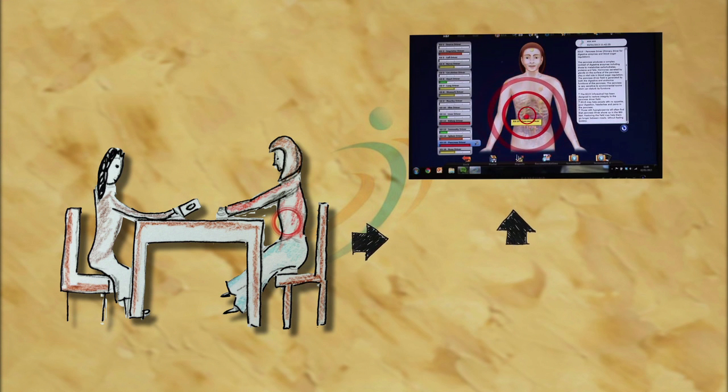Following the scan, there are three follow-up approaches to address disharmony in the HBF.